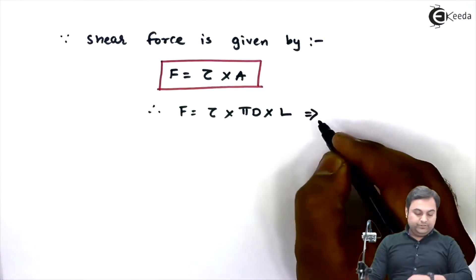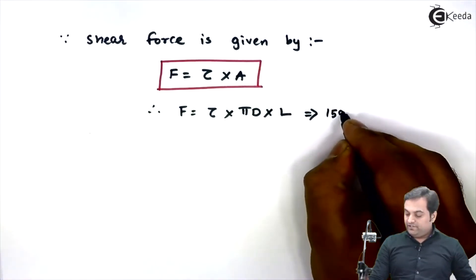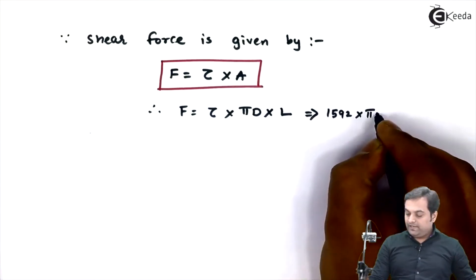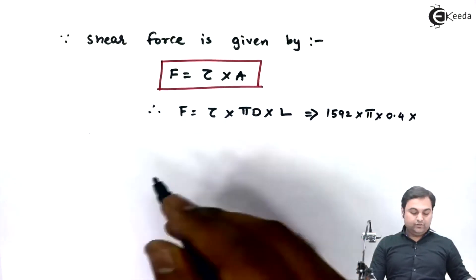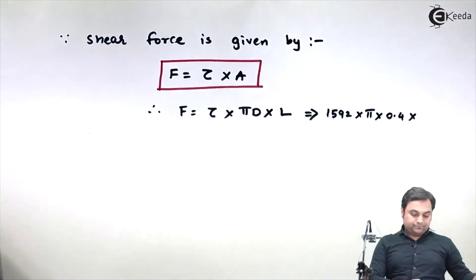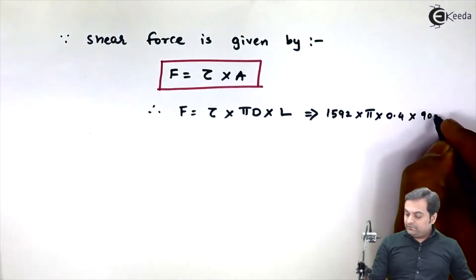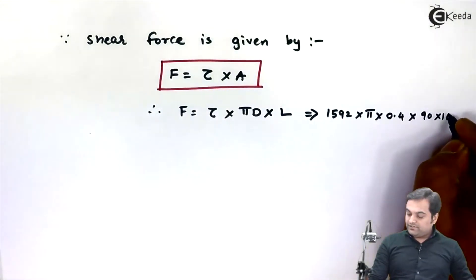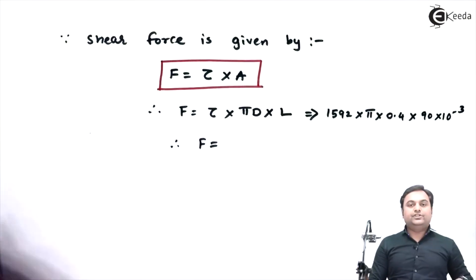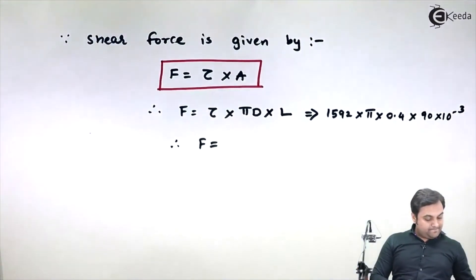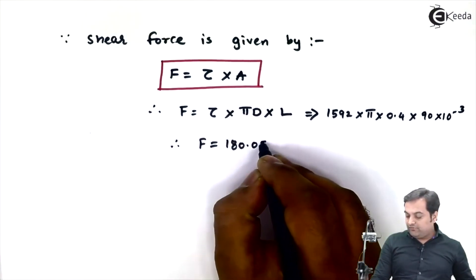Putting in the values: shear stress 1592 × pi × diameter (0.4) × sleeve length (90 × 10⁻³). From this calculation, I get the shear force as 180.05 Newton.